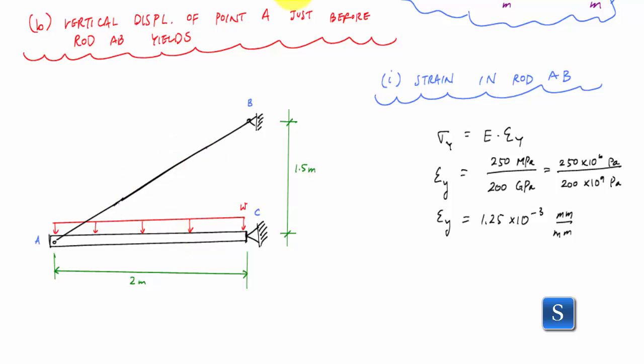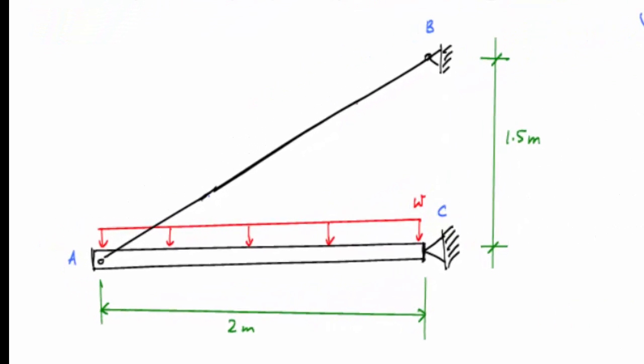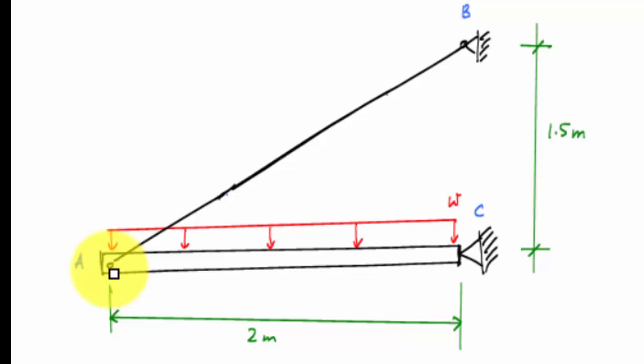When point A goes down, assuming deformations are super small just because it's going to be a large structure and we can't really see what's happening. The deformations are really, really small. And what we can do is assume that point A pretty much goes straight down like this.